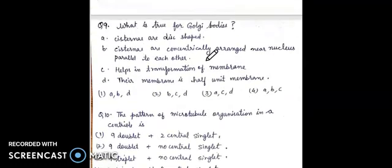Question 9: what is true for Golgi bodies? A. Cisternae are disc-shaped. B. Cisternae are concentrically arranged near the nucleus, parallel to each other. C. Helps in transformation of membrane. D. Their membrane is half unit membrane. Options: first A, B, D; second B, C, D; third A, C, D; fourth A, B, C.